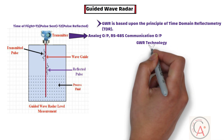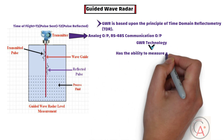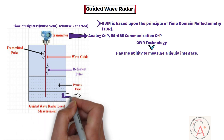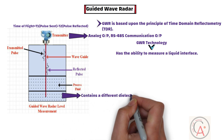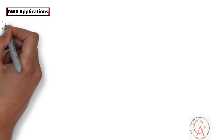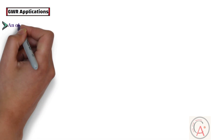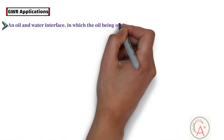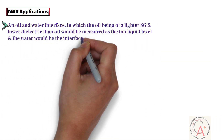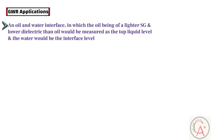Guided wave radar technology also has the ability to measure a liquid interface. A liquid interface is the ability to detect the top liquid level of the media as well as the interface level — the level of the media below the top liquid — which contains a different dielectric or physical property. A typical application would be an oil and water interface, where oil, being of lighter specific gravity and lower dielectric than water, is measured as the top liquid level and water as the interface level.